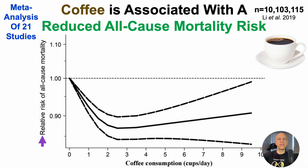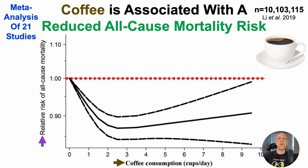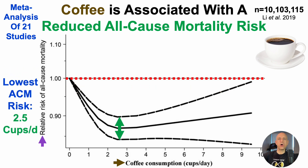On the y-axis, we've got the relative risk of all-cause mortality — in other words, risk of death for all causes — plotted against coffee consumption in cups per day on the x-axis. In terms of what's significant, we put up a red line at a hazard ratio of 1, and then we can see that the lowest all-cause mortality risk was associated with 2.5 cups of coffee consumed per day, and that's because its 95% confidence interval — those are the dashed black lines — are completely below a hazard ratio of 1.